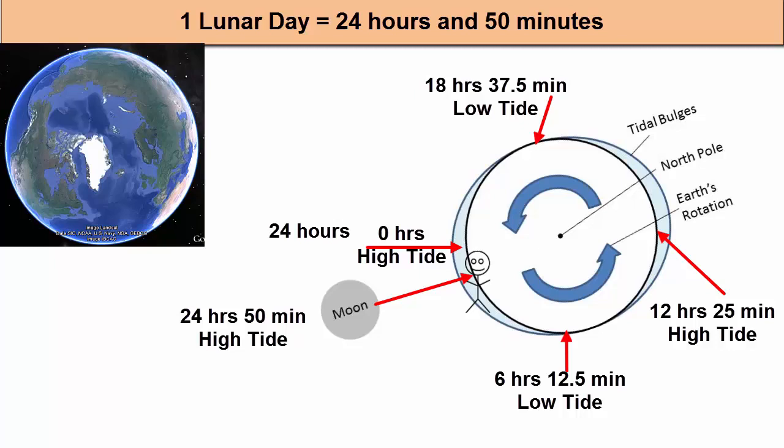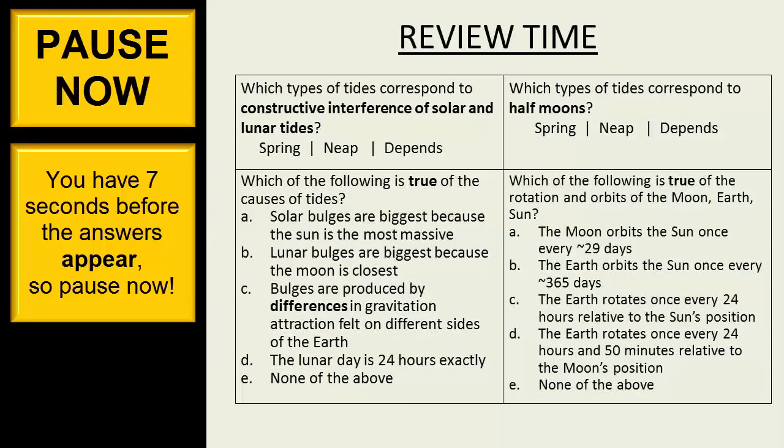And that's why we experience two high tides and two low tides every 24 hours and 50 minutes, or more precisely, the period of one wave is 12 hours and 25 minutes.